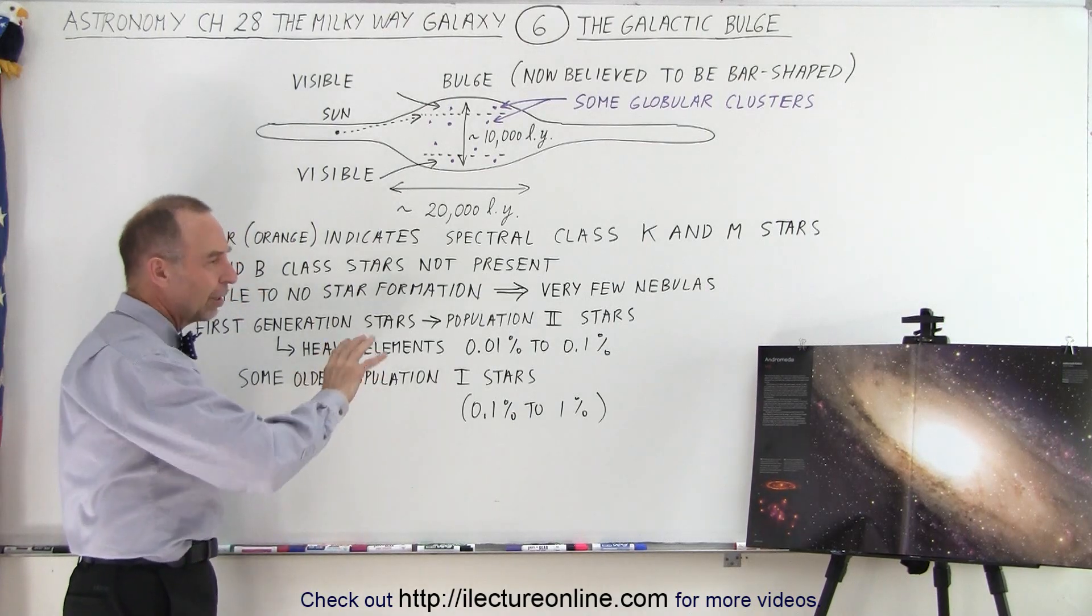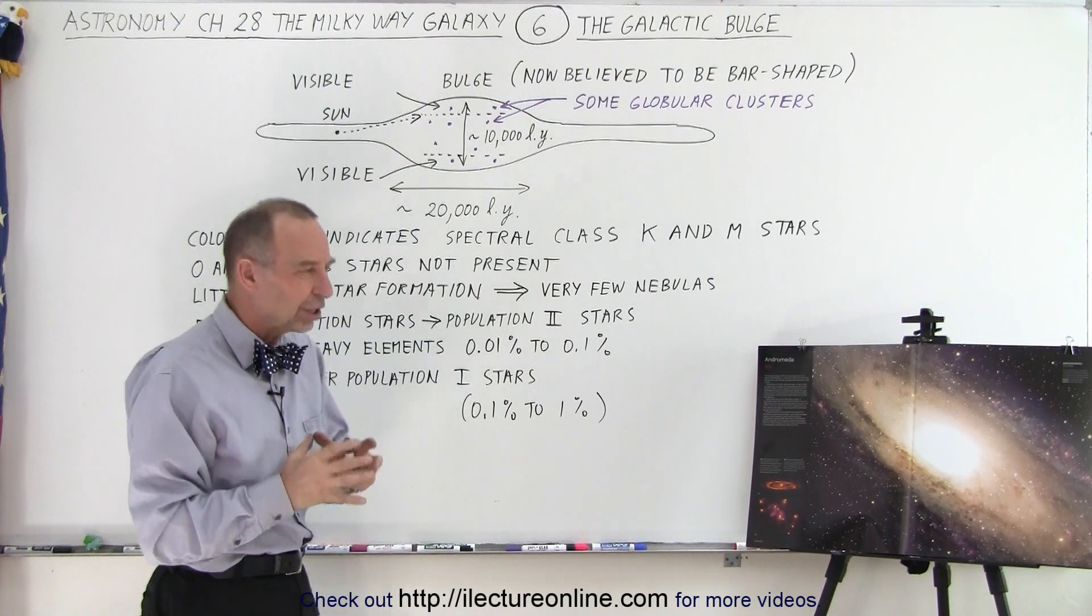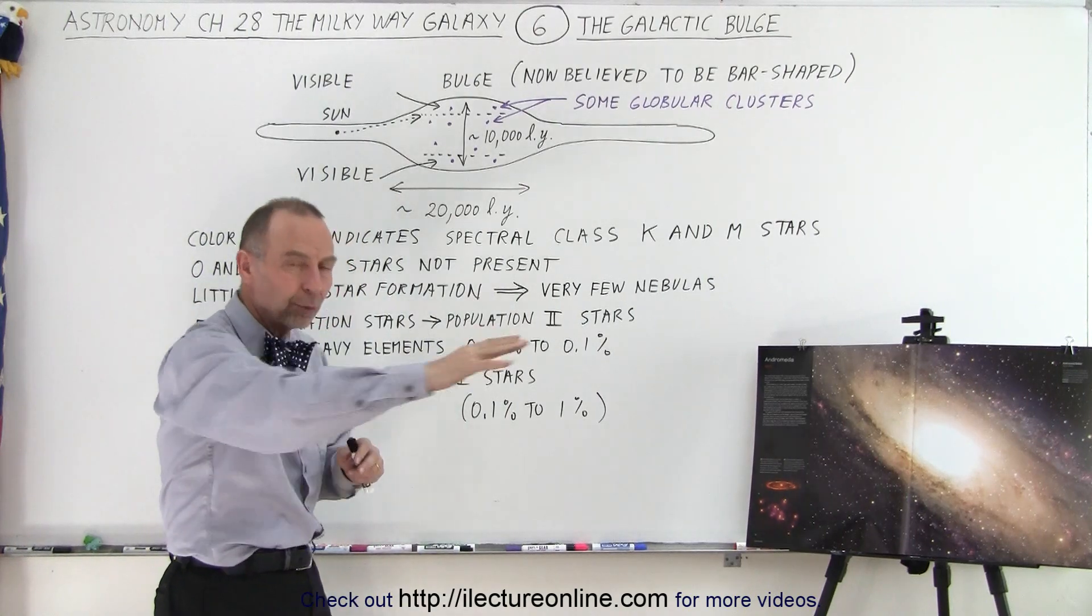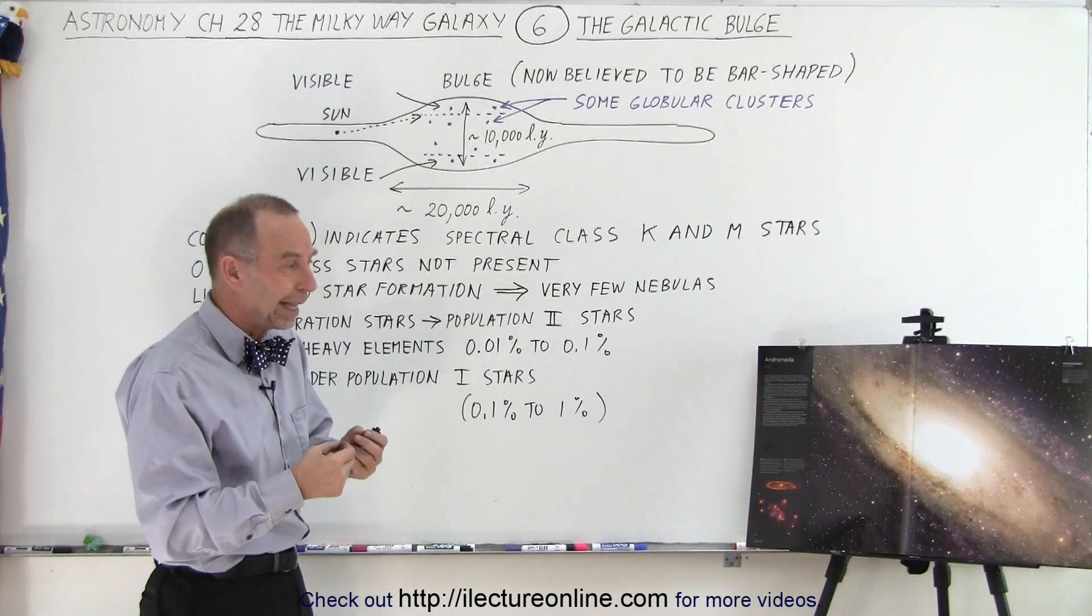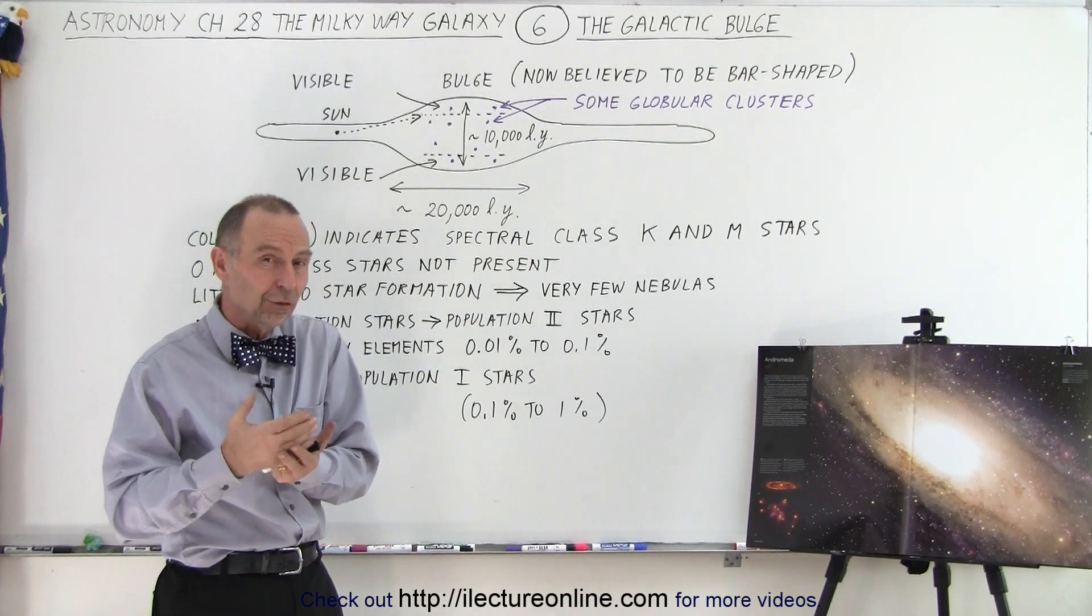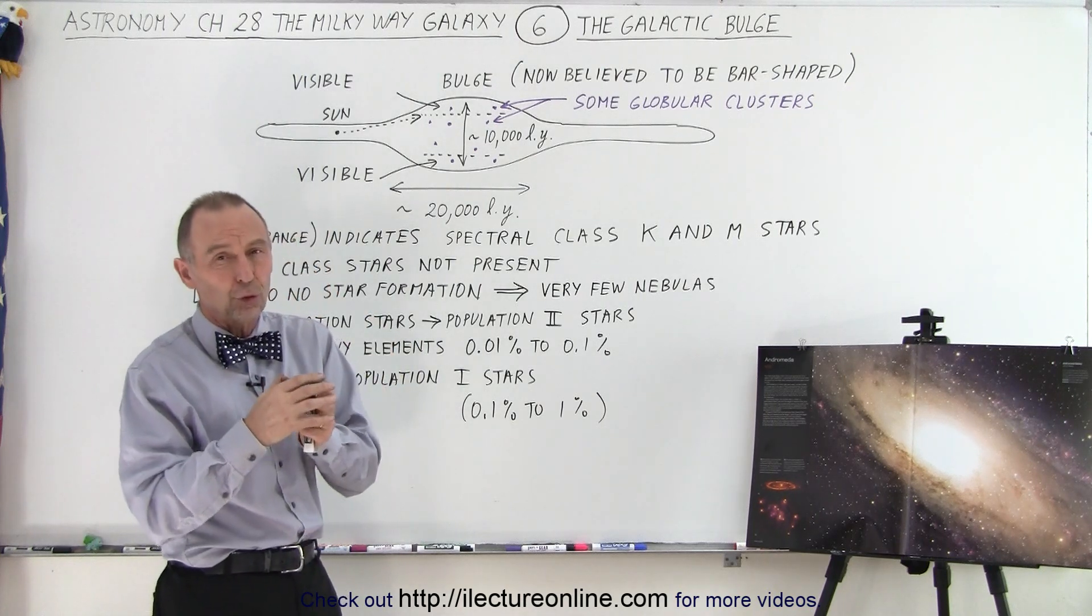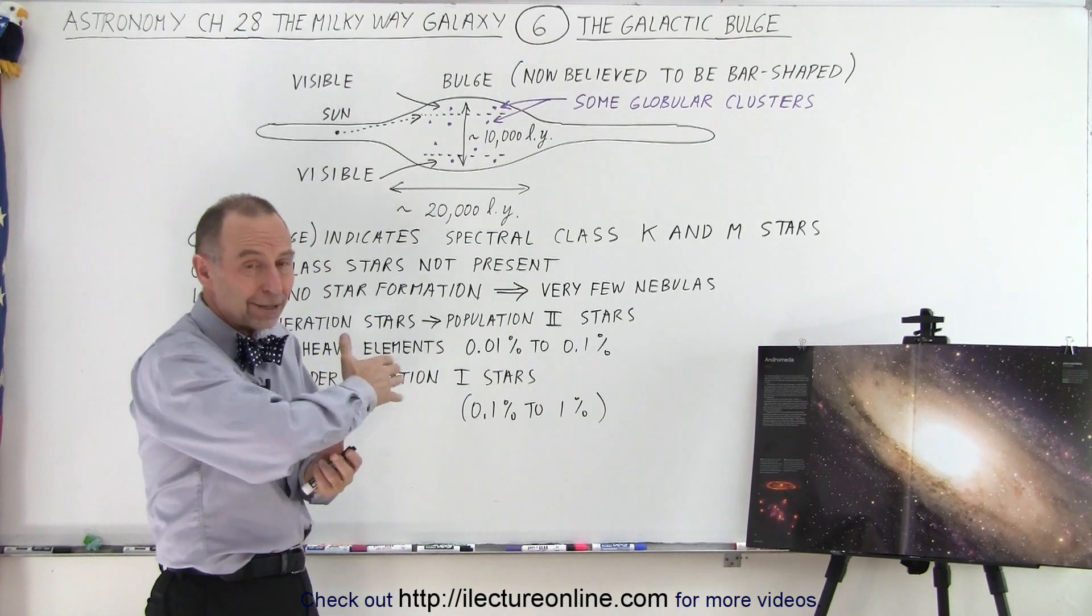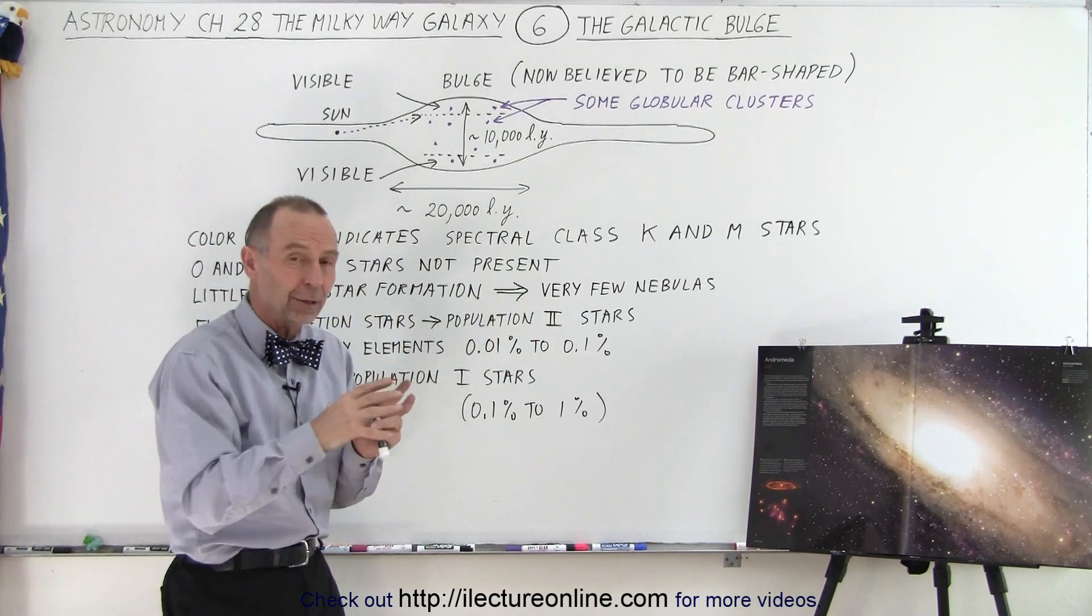Notice that the color of the bulge tends to be much more orangey, reddish to orangey color, rather than the bluish color we see in the spiral arms. In the spiral arms, there's still a lot of star formation occurring. And because of the star formation, the very bright blue giants are still being formed. And those are so bright that they outshine many other regular types of stars. So it gives a kind of a bluish tinge towards the spiral arms.